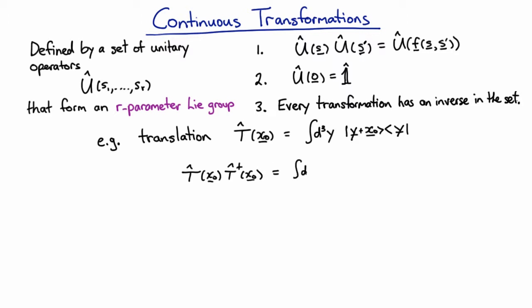Let's have a look at that. We've got T of x naught. Now when I do the dagger, remember we're going to have to choose a different dummy index. When you take the Hermitian conjugate of operators, you turn all bras into kets and all kets into bras. You flip the order of all operators. I'll use z.